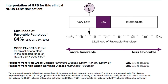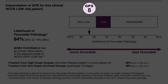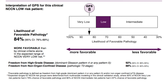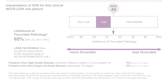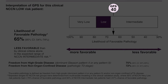The Oncotype DX test generates a quantitative genomic prostate score, or GPS, which you can see in the light purple circle. This number will range from 0 to 100. The lower the GPS, the more favorable the tumor biology and less aggressive the disease. Conversely, the higher the GPS, the more aggressive and less favorable the biology.